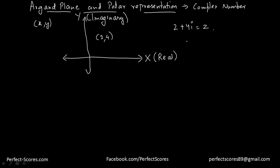If I have 2 plus 0i, that would be represented as (2, 0). If I want to represent (−3, 2) as a complex number, that is going to be −3 + 2i, because the x-coordinate is the real part and the y-coordinate is the imaginary part. This plane is known as the complex plane, or it's also known as the Argand plane.